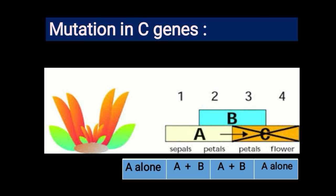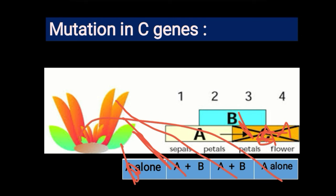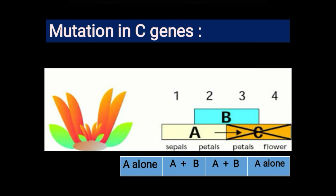Next is mutation in the C gene. If C gene is mutated, A gene becomes more active and takes up the function of C gene. In the first and outer whorl, A gene forms sepals; in the second whorl, A plus B gene forms petals; in the third whorl, since C gene is absent and A gene replaces it, A plus B gene again forms petals; and in the fourth whorl, A gene alone forms sepals. So a flower with mutated C gene will not have stamens or carpels.